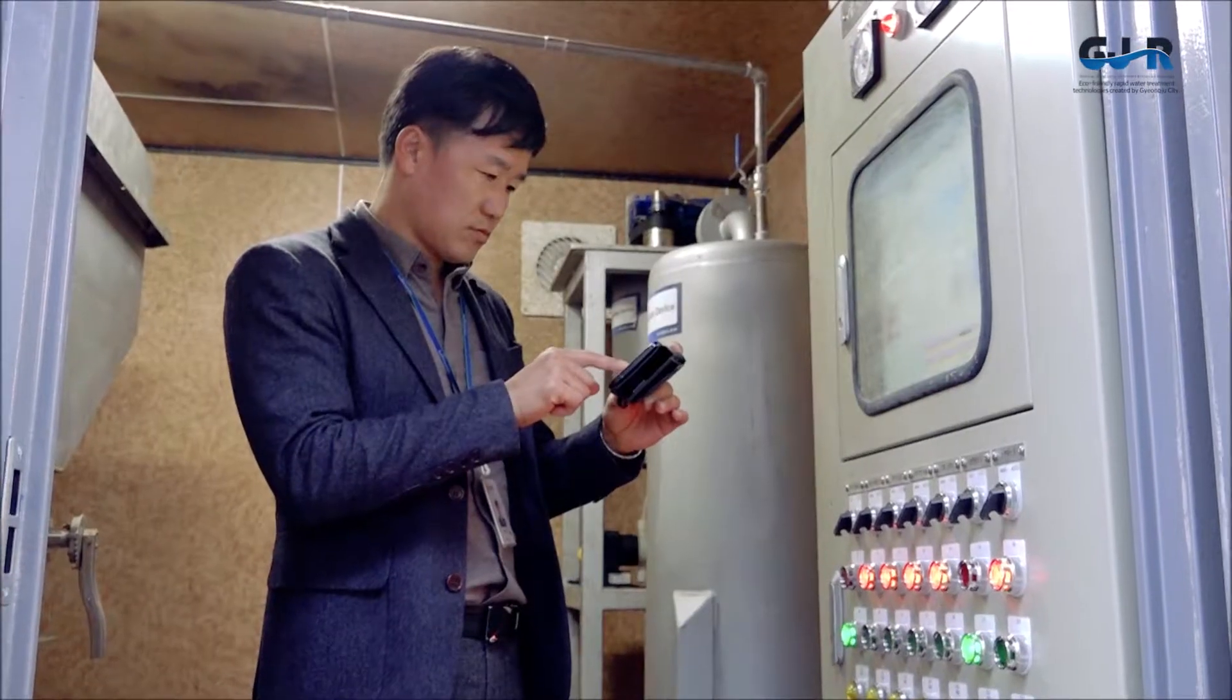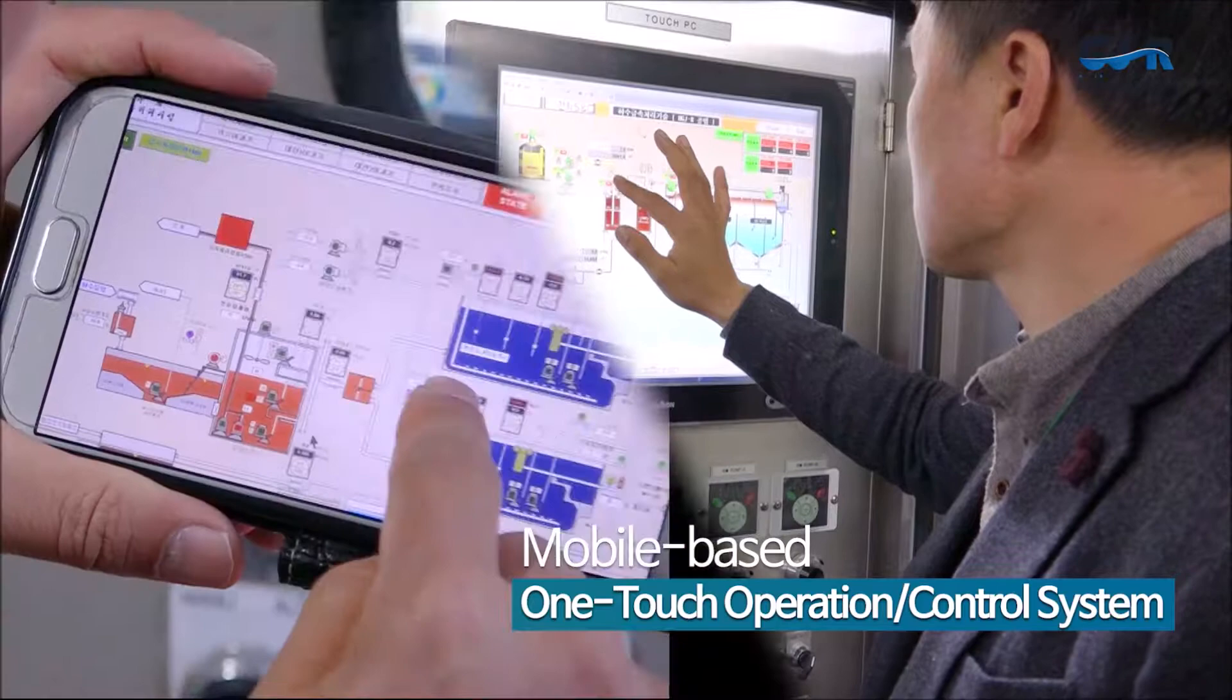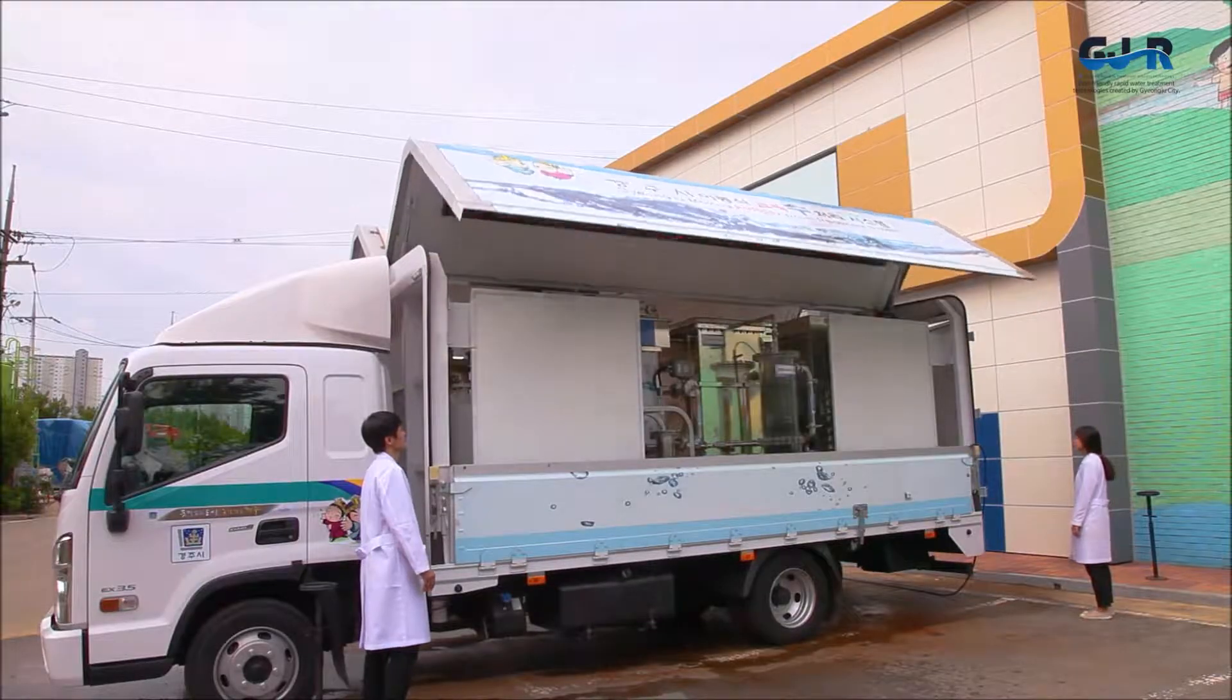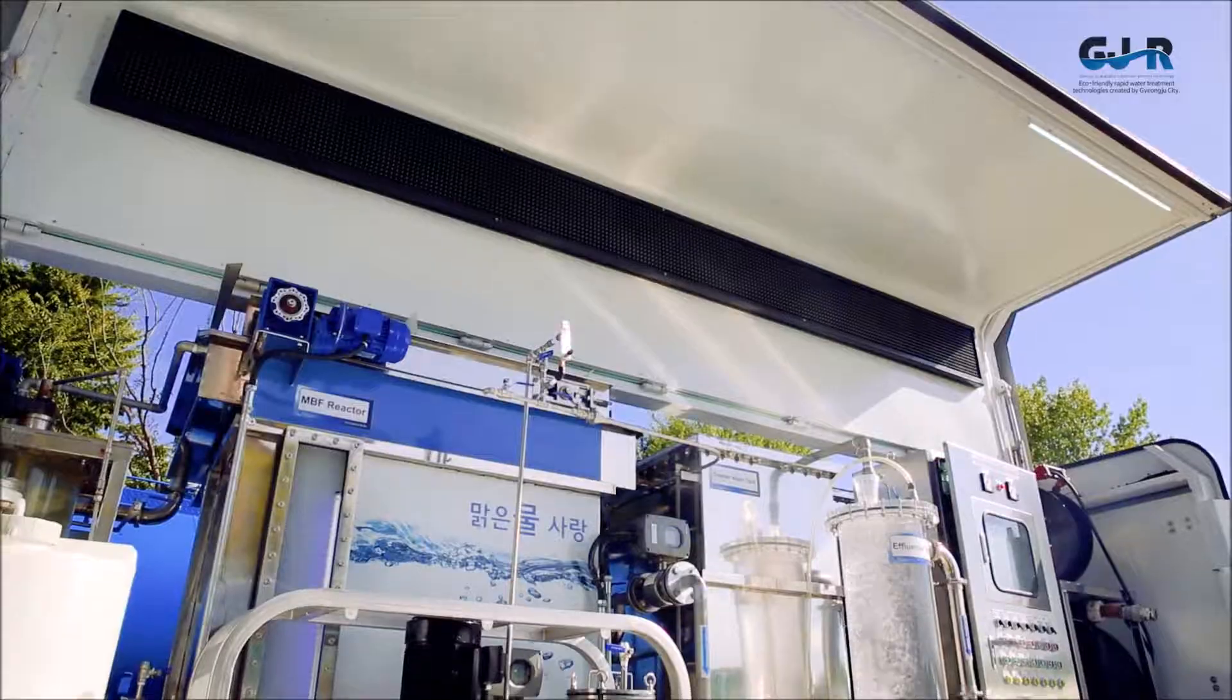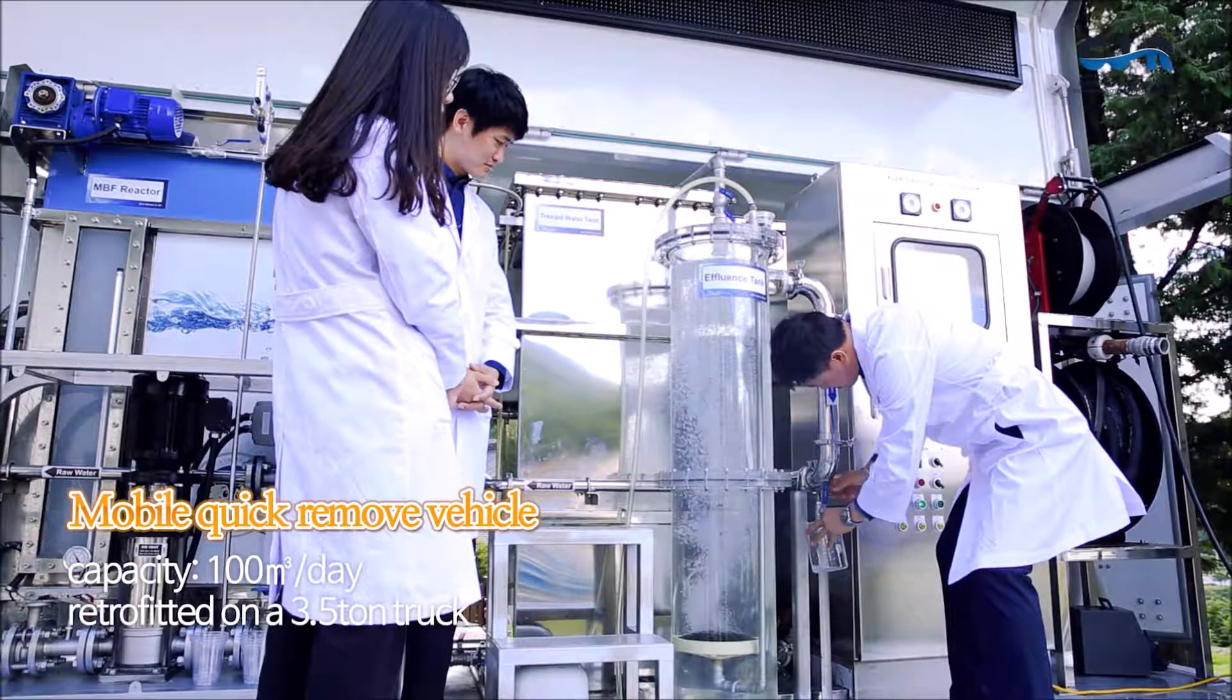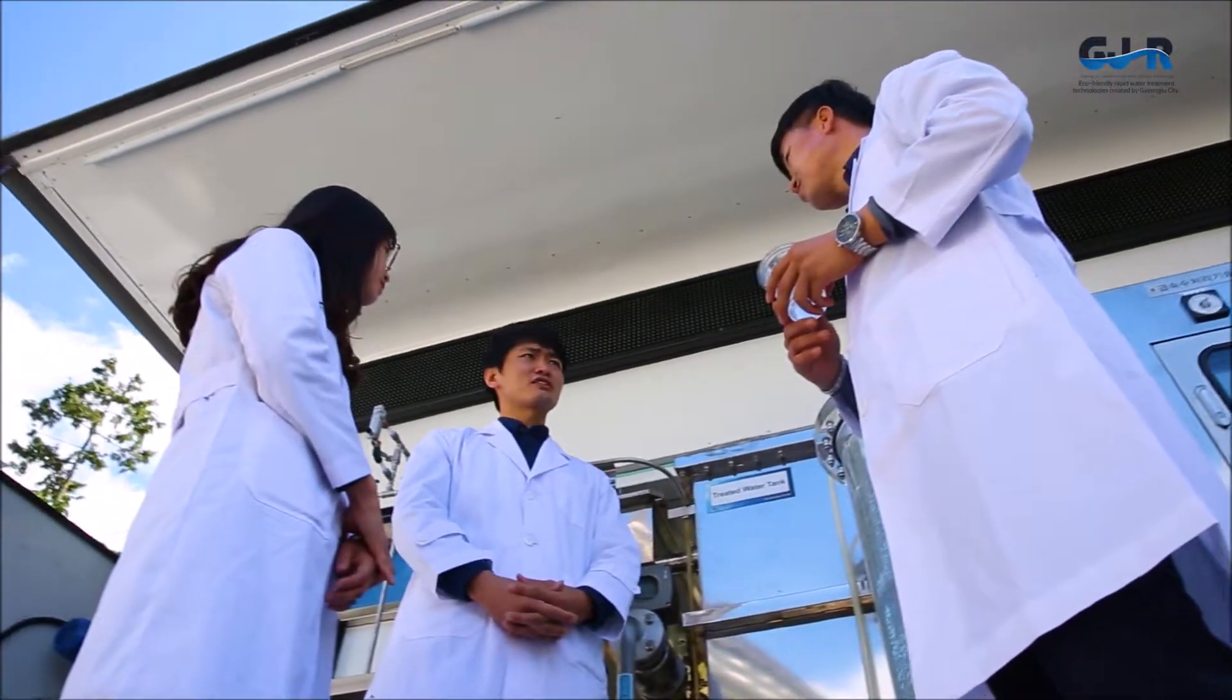The Gyeongju Rapidity treatment process can be operated via a mobile-based, one-touch control system, allowing for customized operation and maintenance. In the case of emergencies, mobile rapid treatment vehicles and containers capable of removing algal blooms while treating waste sewage are continuously being developed and operated through research and development.